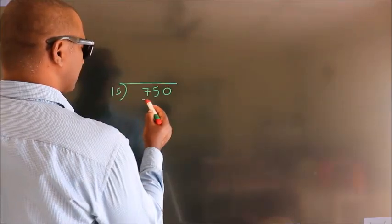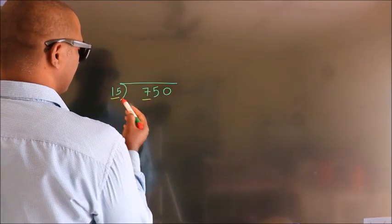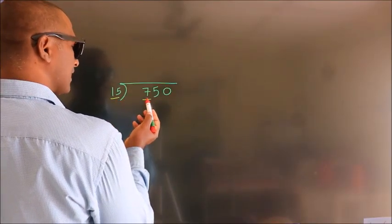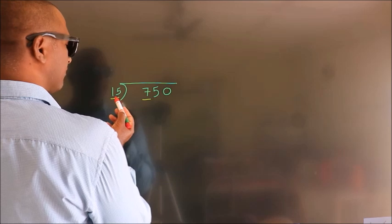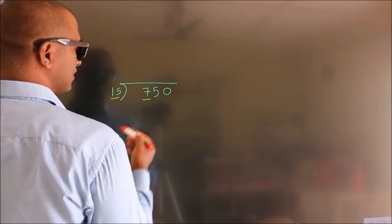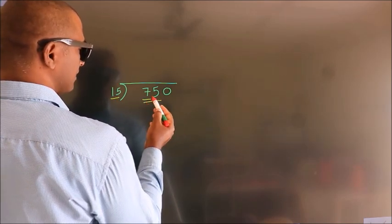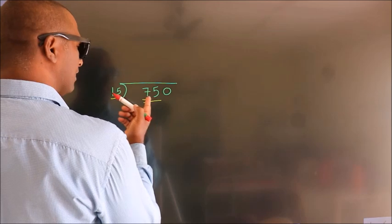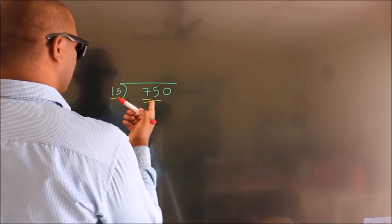Here we have 7. Here 15. 7 is smaller than 15, so we should take two numbers: 75.